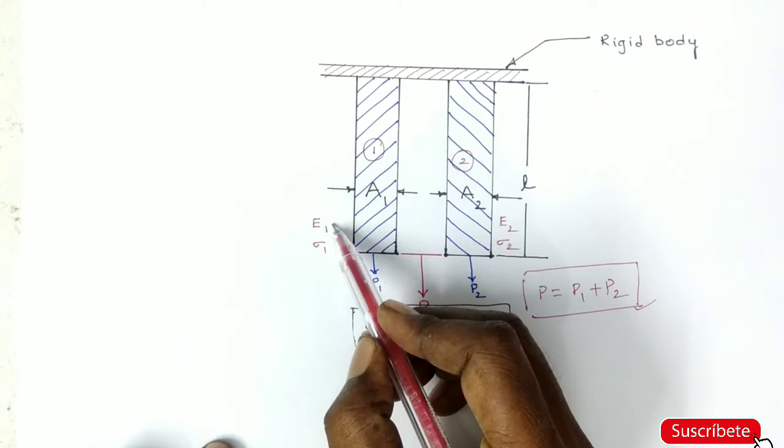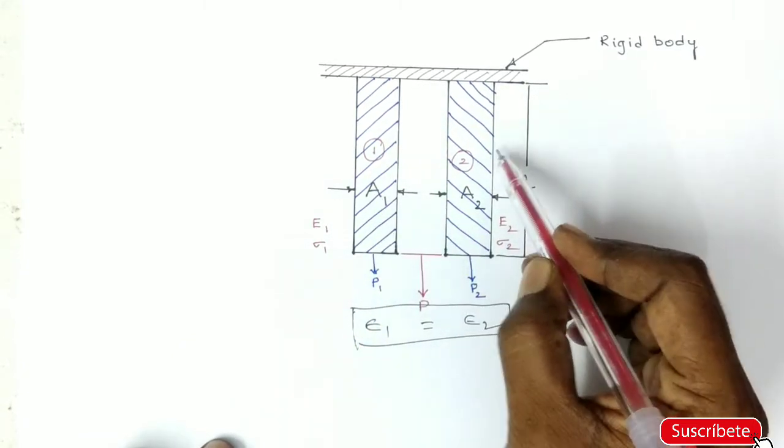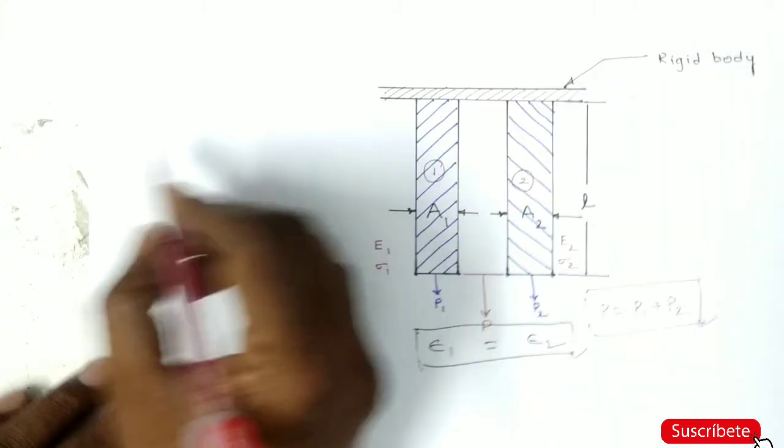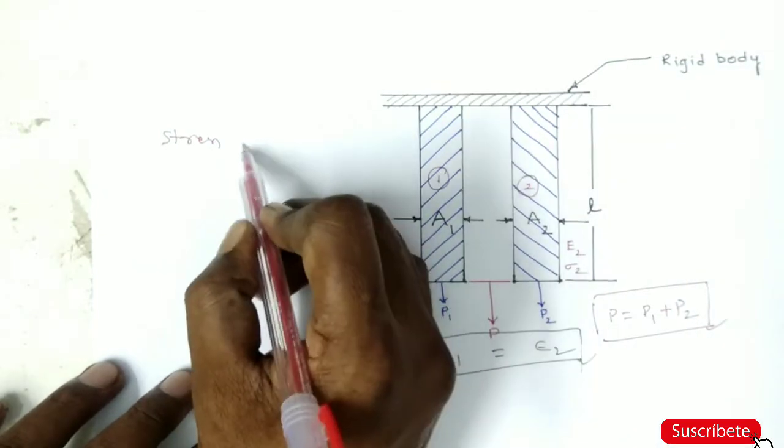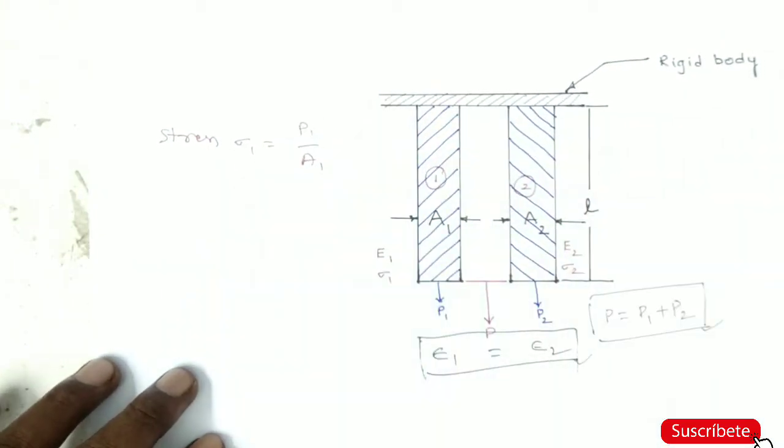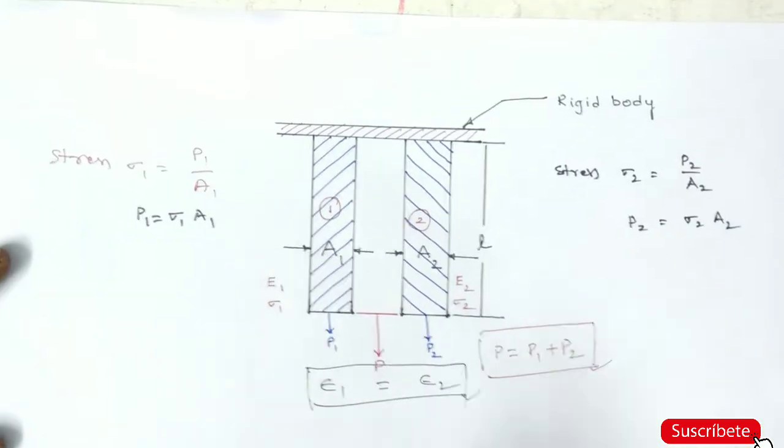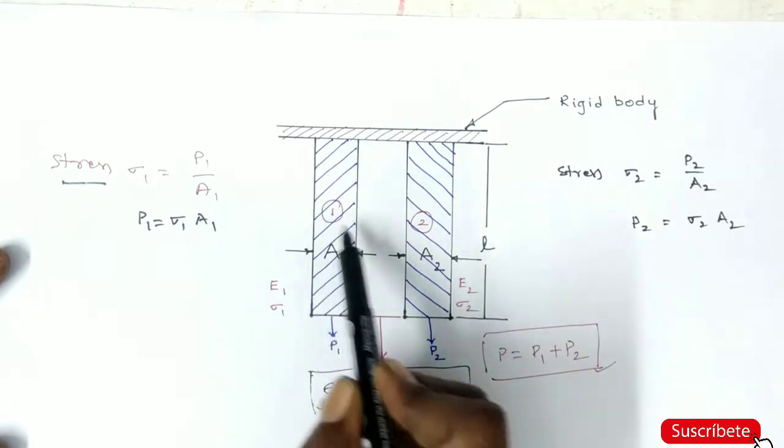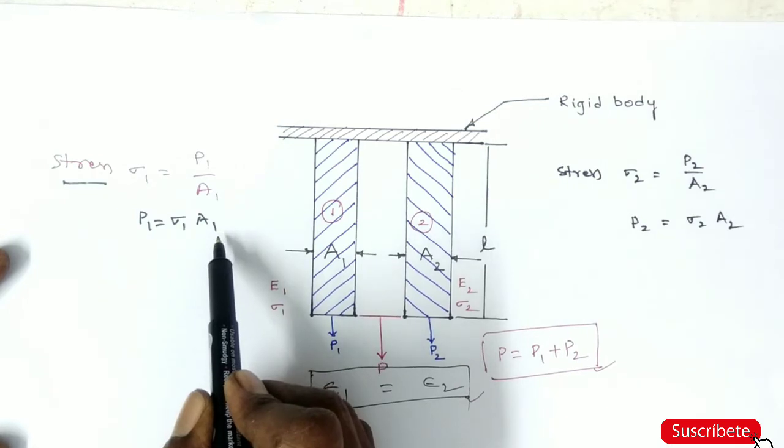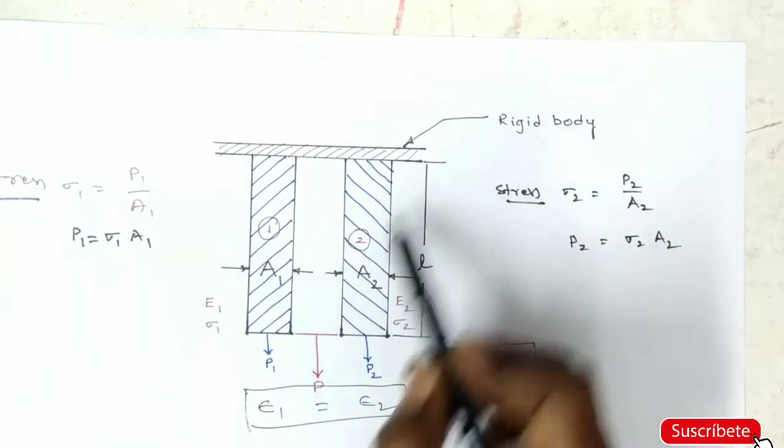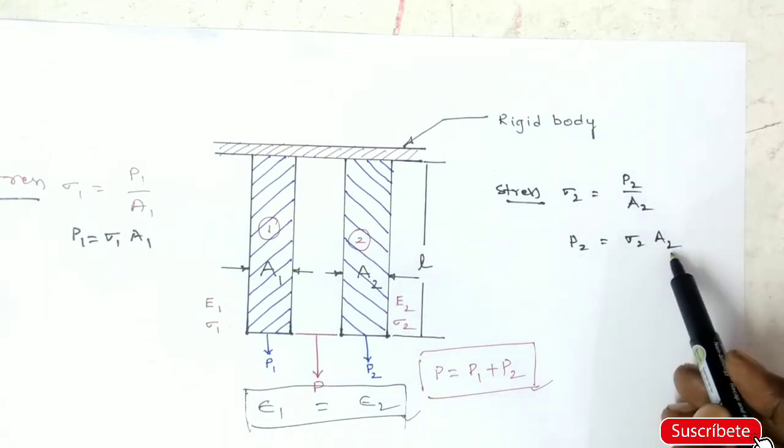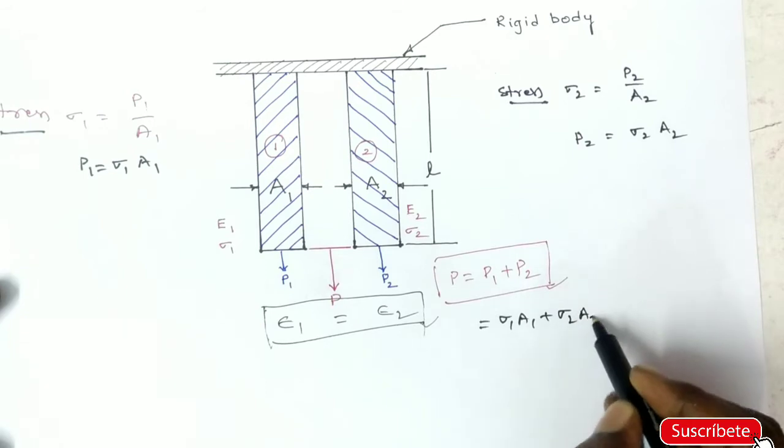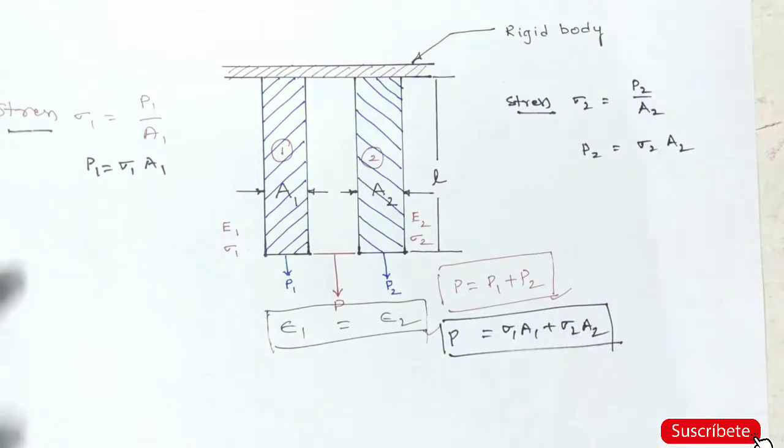Stresses: E1 is Young's modulus at material 1, E2 is Young's modulus material 2. Sigma 1 stress at material 1, sigma 2 stress at material 2. Stress sigma 1 equals P1 by A1. Stress at material 1 is sigma 1 equals P1 by A1, so sigma 1 into A1. Similarly, stress at element 2, P2 is sigma 2 times A2.